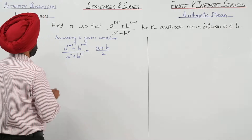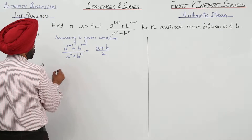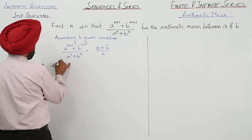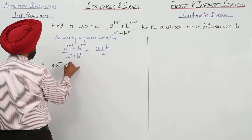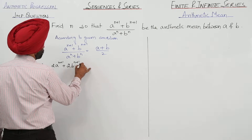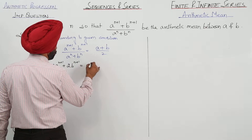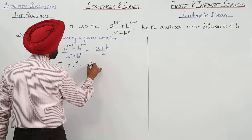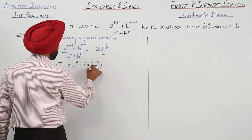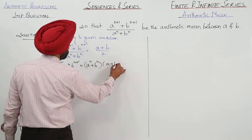So, twice of a raised to power n plus 1 plus twice of b raised to power n plus 1 is equal to a raised to power n plus b raised to power n, multiplied by a plus b.